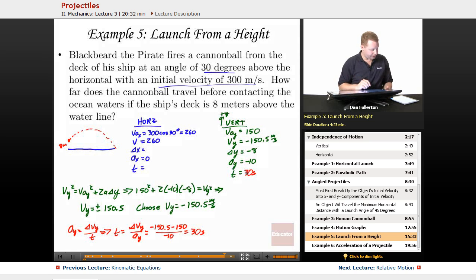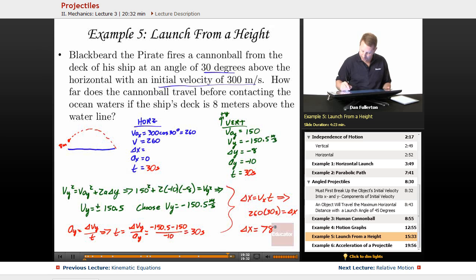So if it's in the air for 30 seconds, that's the same time horizontally. We can solve for the displacement in the x position by delta x equals vt. Our velocity in the x direction, 260. Our time in the x direction, 30 seconds, equals delta x. So I come up with the delta x value of about 7,800 meters.